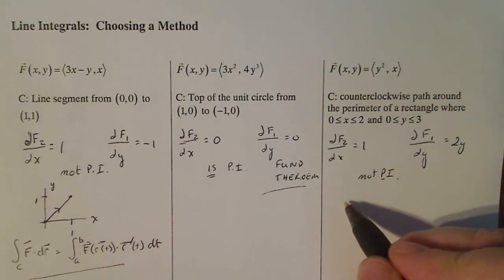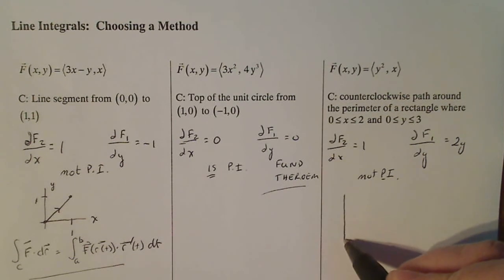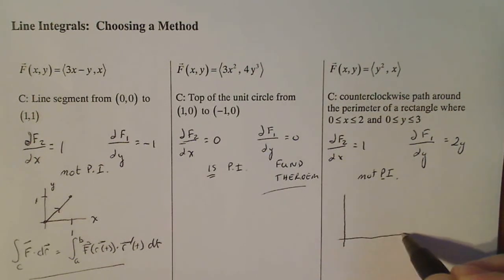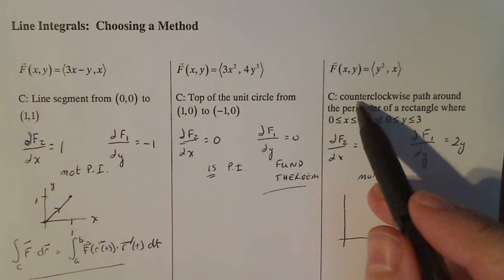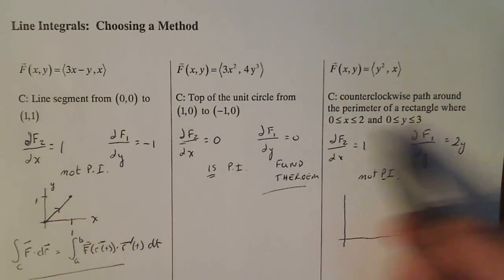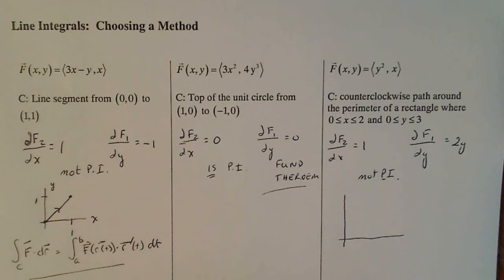And last but not least, I'm going to draw the piecewise smooth curve here, or whatever it is, says it's counterclockwise path around the perimeter of a rectangle, where x goes from zero to two, and y goes from zero to three.